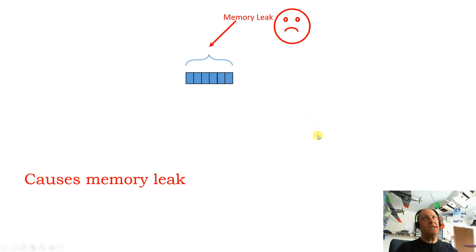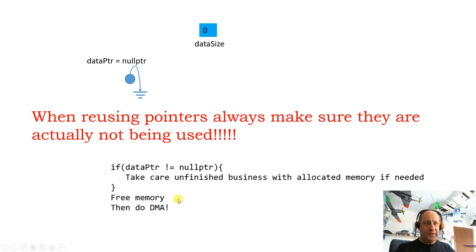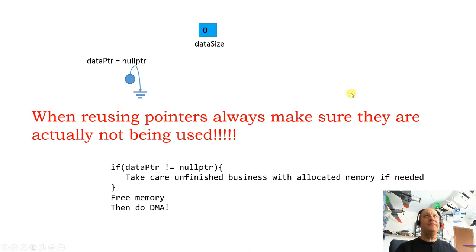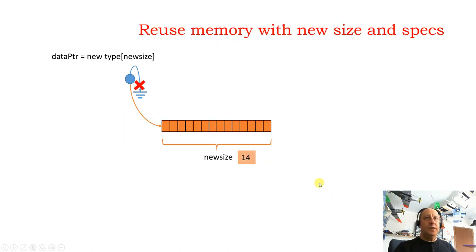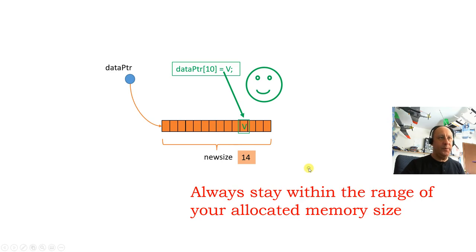When reusing, always take care of unfinished business, free the memory, then do the DMA. The if statement handles unfinished business — you don't need it just to free memory; just delete the pointer. If it's null nothing happens. But if you have unfinished business with that data, do it first, then free memory, then do dynamic memory allocation. Always stay within the range of your memory size to avoid memory leaks.